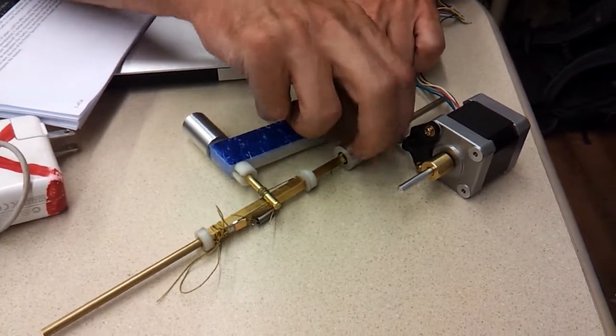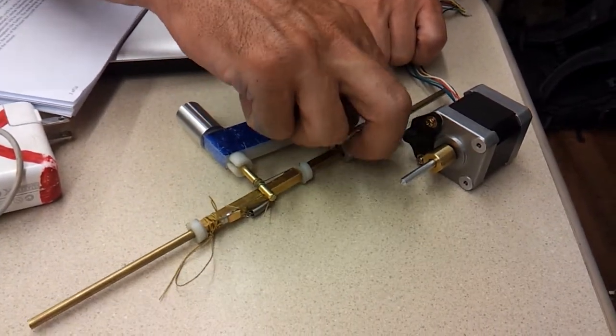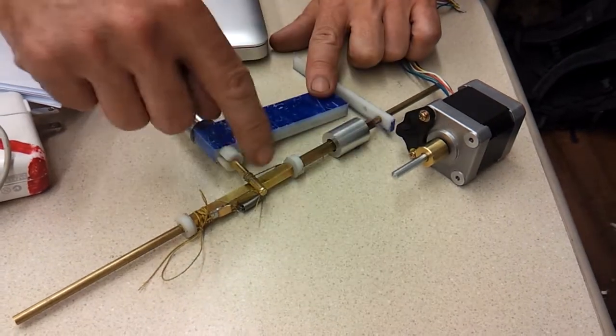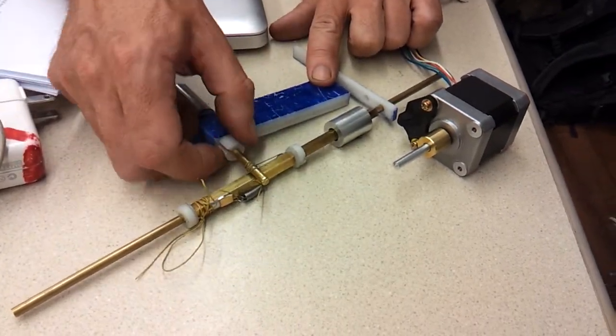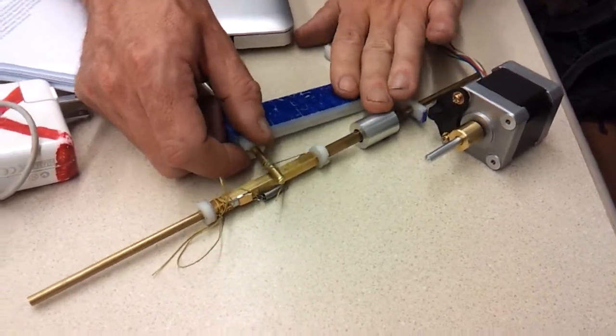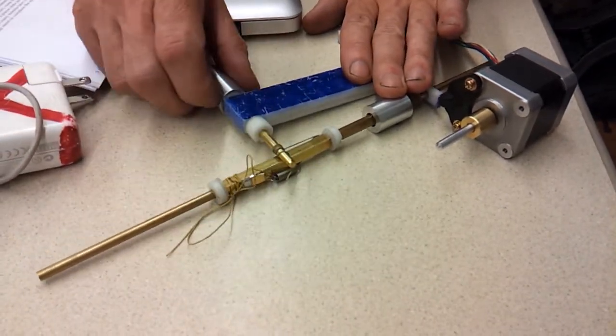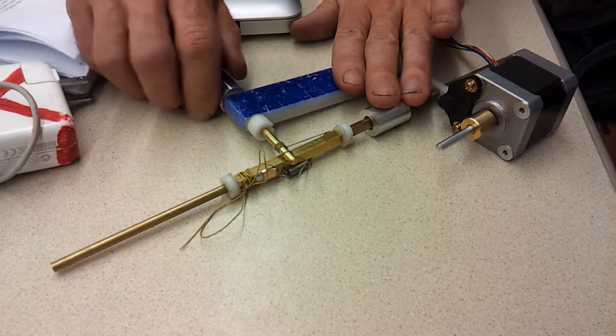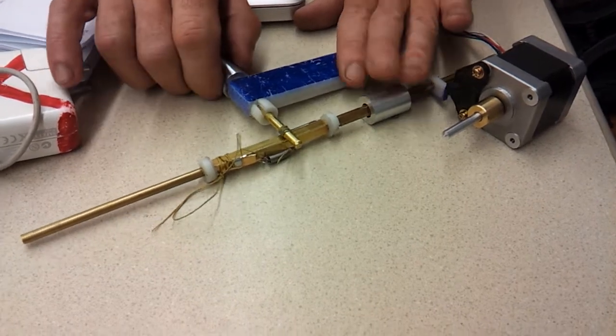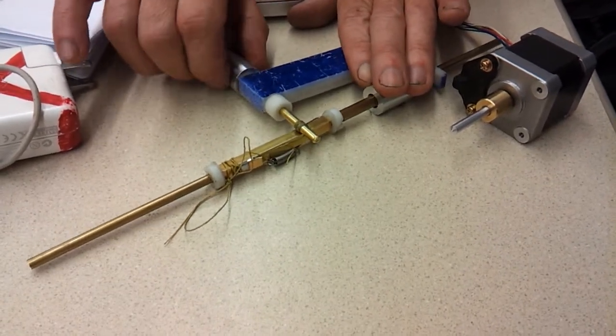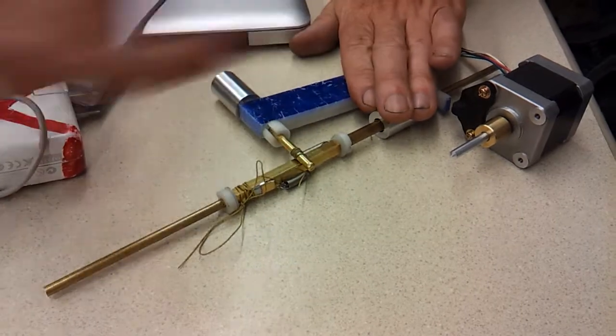This rotates independently, so while this is rotating the alpha, it's not affecting the Z. The alpha is the angle or orientation of the part. The poly is the Z, which lowers it up and down.